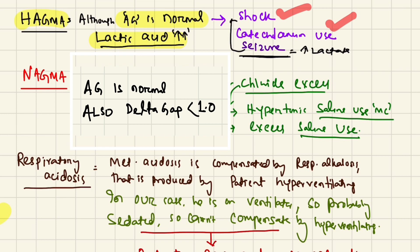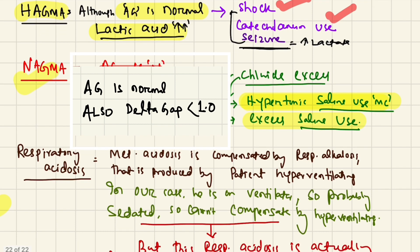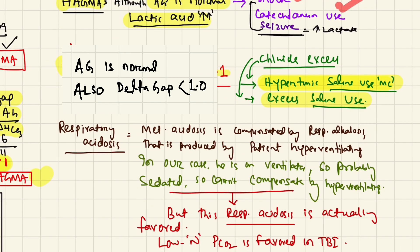The patient is also having a NAGMA — the anion gap is normal and the delta gap is more than 1, confirming this. The source of the NAGMA, as several of you suggested, is excessive saline use. In traumatic brain injury, hypertonic saline is commonly used initially. When the patient went into shock, normal saline was used for resuscitation. Both hypertonic and normal saline can cause a normal anion gap acidosis.